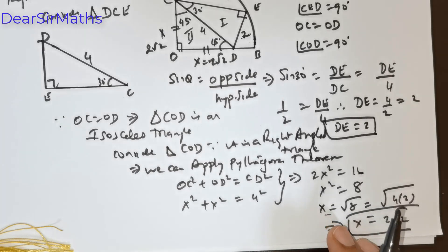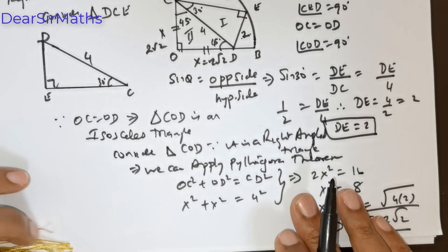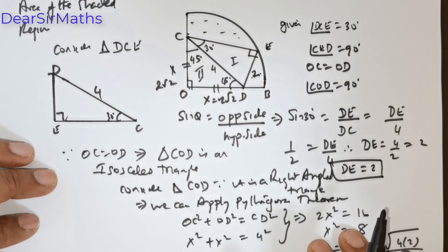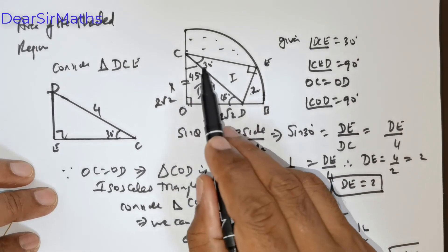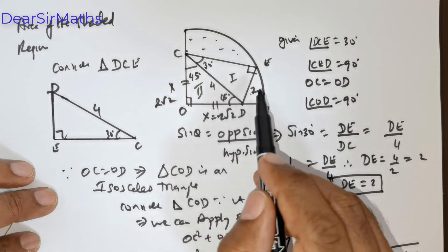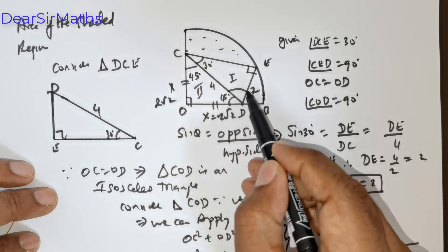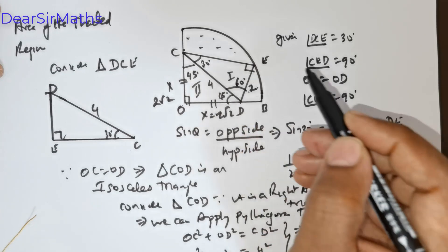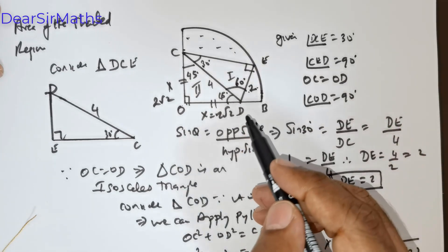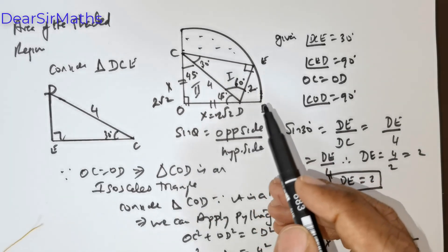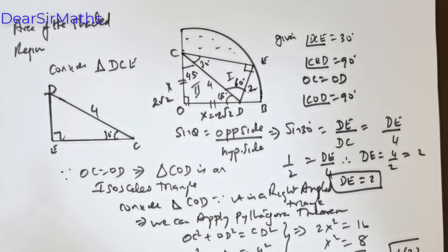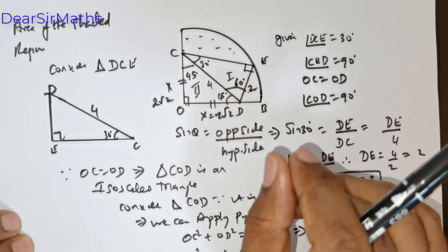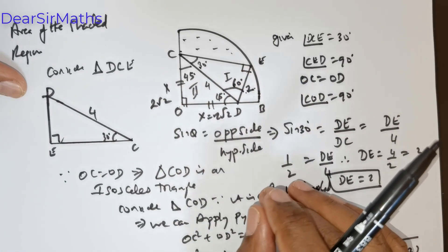I would like to use the cosine angle formula to find the radius. This angle is 30 degrees, this is 90 degrees, so this remaining angle would clearly be 60 degrees. Now I wish to calculate the area of T1 and T2.